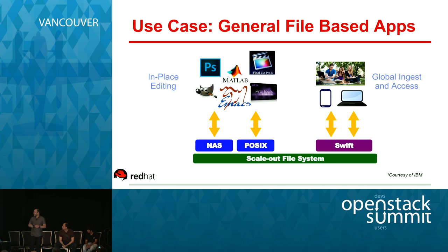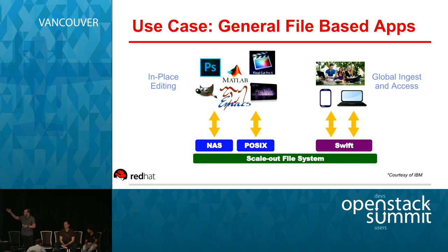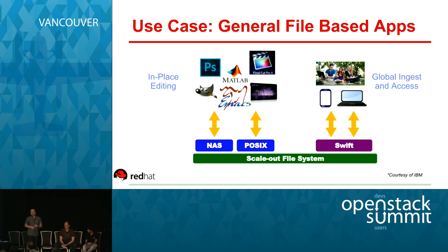Here's another example: we all take pictures with our phones and post them over an object interface to some cloud system. In this model, pictures come in over the Swift interface into a clustered file system with a unified namespace. They are then accessible to VMs that can transcode that content into other bit rates. For instance, if you had a 4K camera, you post the movie over Swift, and many VMs can act on it by accessing the clustered file system directly.